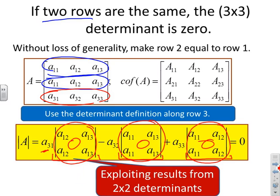Essentially we've exploited the two-by-two result: if a two-by-two determinant has common rows then it's zero, and using that result we've shown that if a three-by-three has common rows the determinant is also zero.